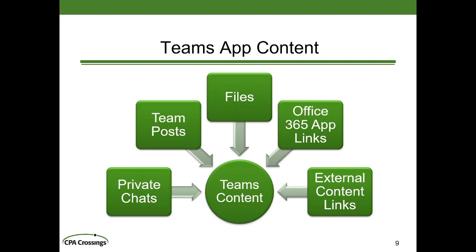A fourth category of content is links to other Office 365 apps — for example, a Power BI dashboard you can view within Teams, or a link to a Planner project plan. You can link to virtually any Office 365 application that makes sense. Finally, there are external content links — outside of Office 365 — such as your company's financial or ERP system, your website, or a customer's website. There's virtually no limit to what you can link to, other than the security controls you want in place.